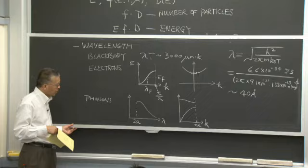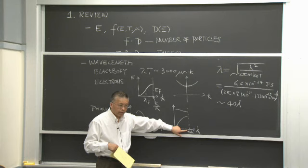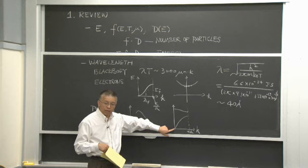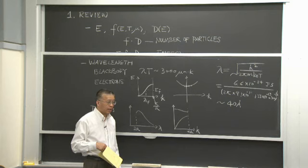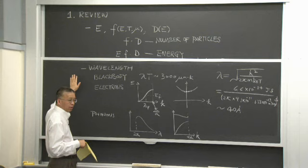For phonons, this is the typical dispersion relation. At the zone boundary, the wavelength is 2a, and it goes to very long wavelengths at the zone center — those are sound waves. If you do the blackbody calculation for phonons, you get the density of states: energy of phonon times density of states times the Bose-Einstein distribution. That's similar to blackbody radiation, except you have a cutoff wavelength at 2a, the lattice constant — unlike electromagnetic waves in free space.